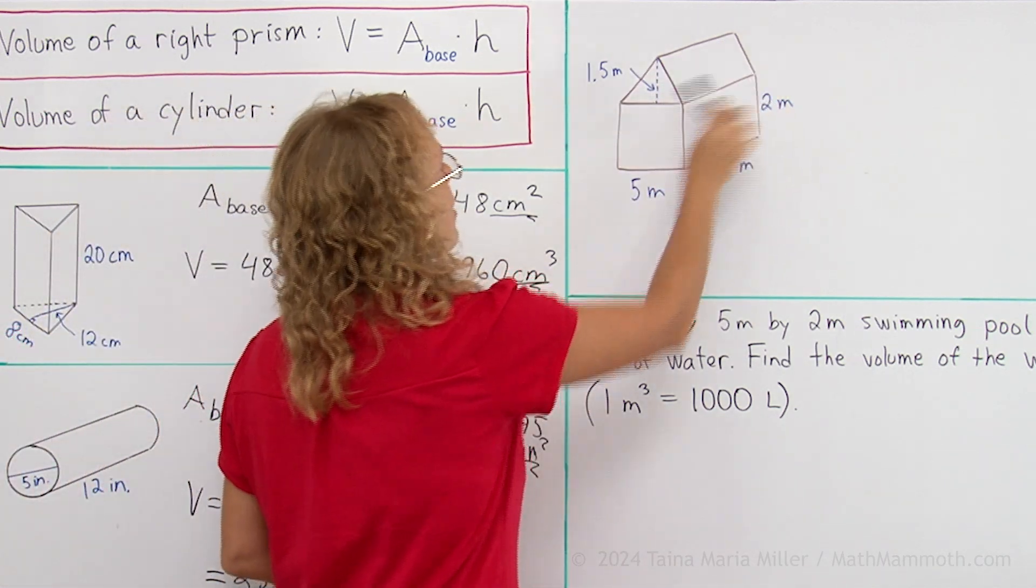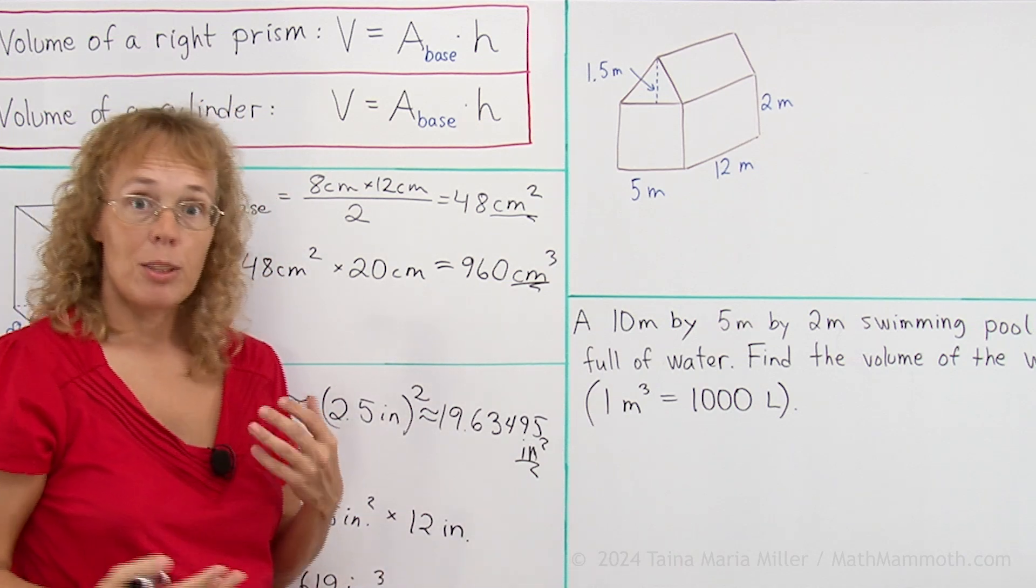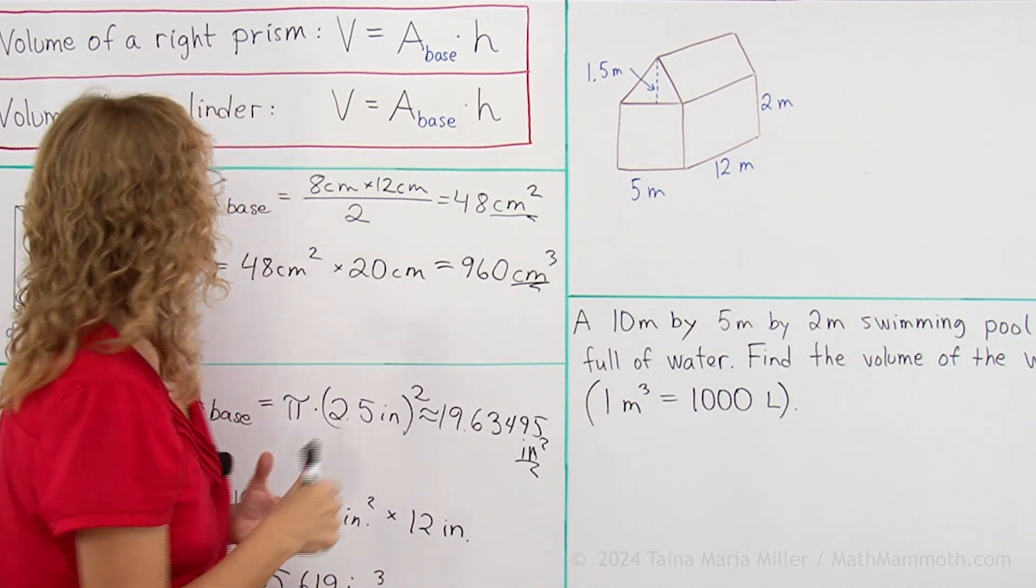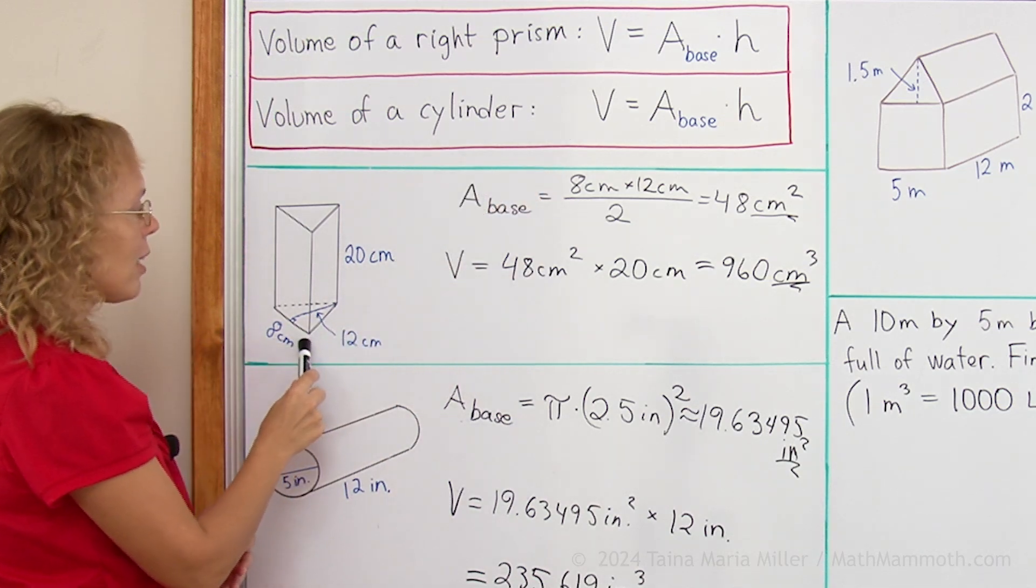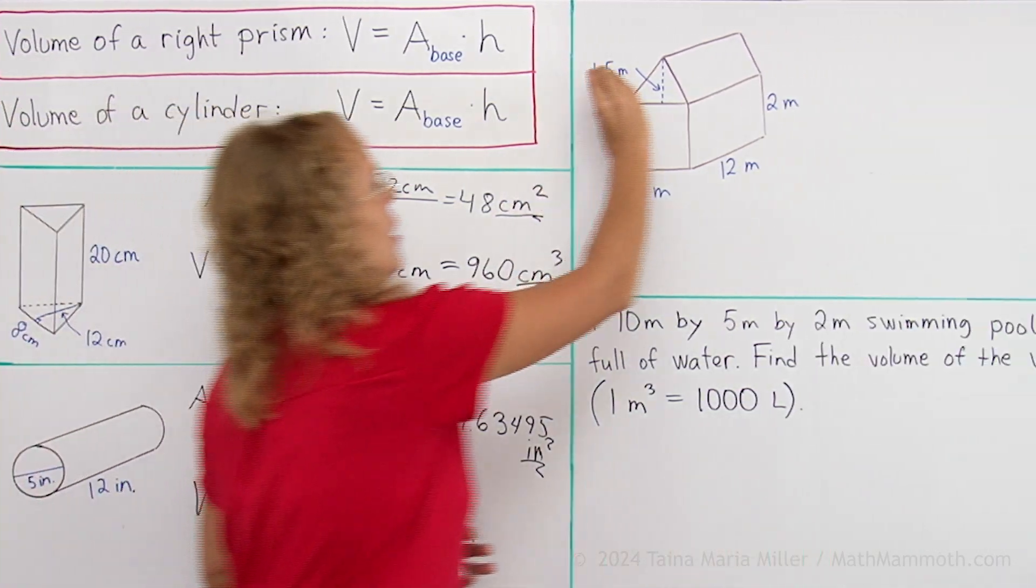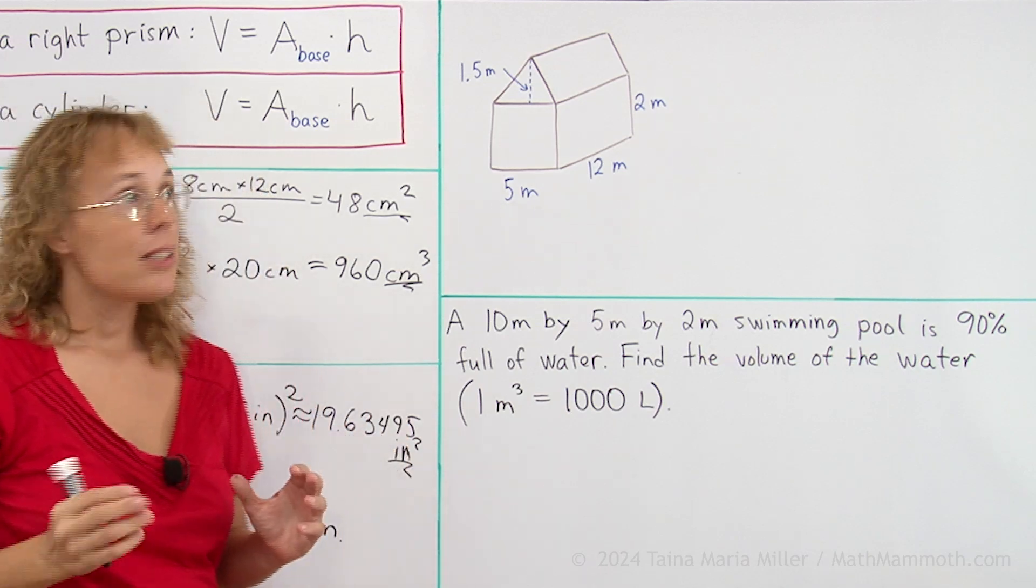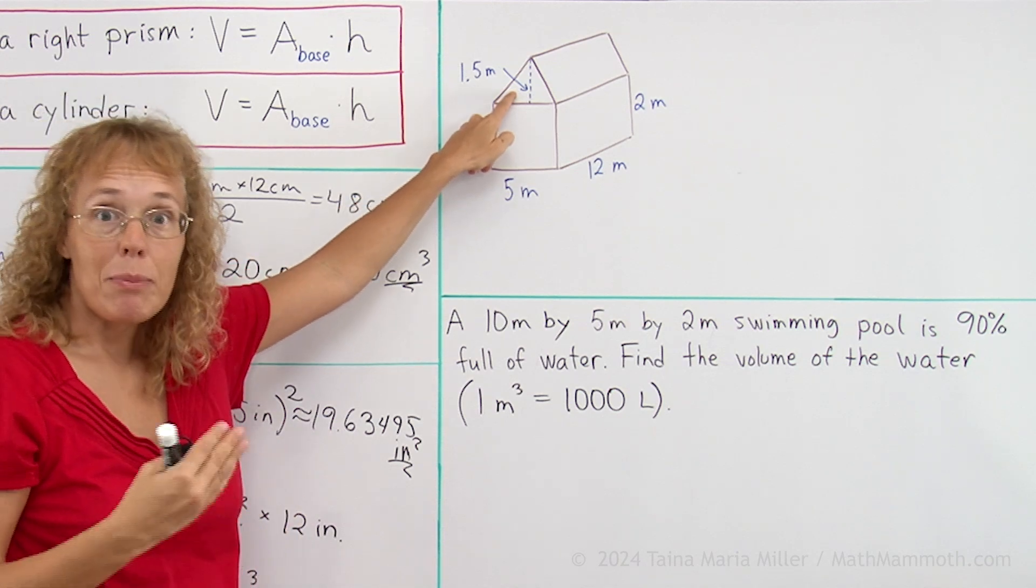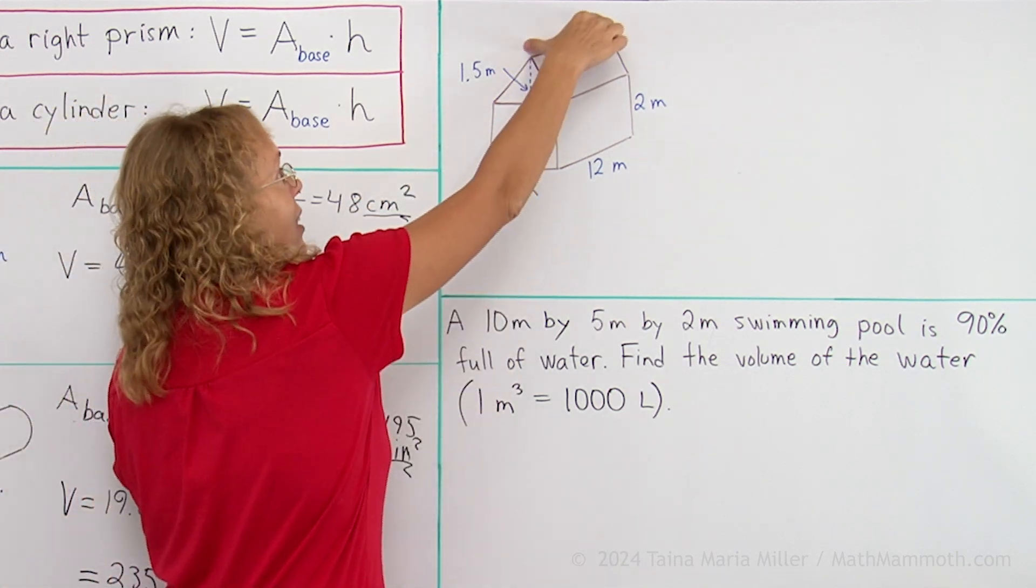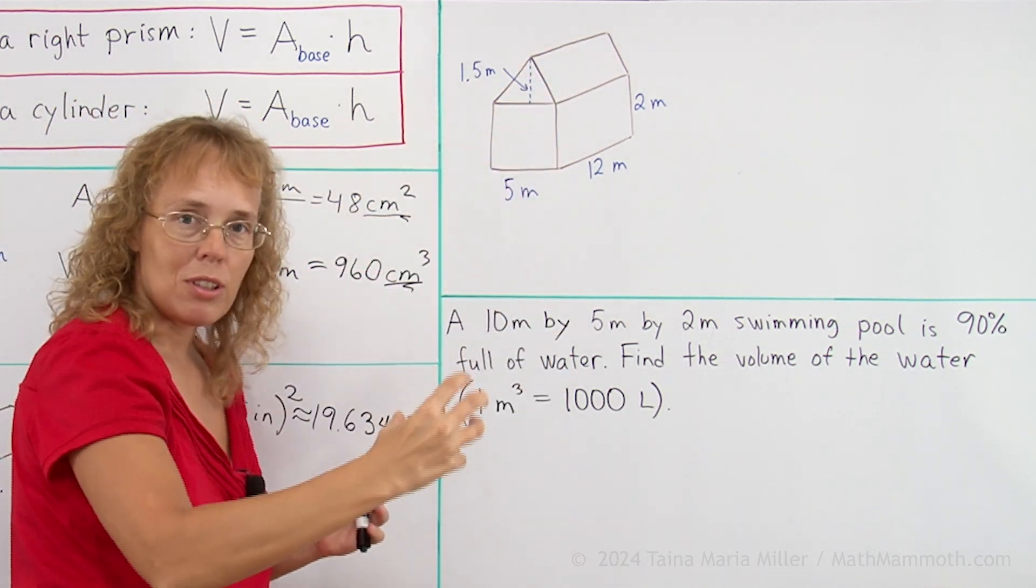And then the top part, the roof, is a prism also. It is just like here, right? But it's not standing upright like this one is. It is here, like laying flat. So for the top part, the prism here, you need to think of this as its base. And then this as its height, if you were able to turn it upright.